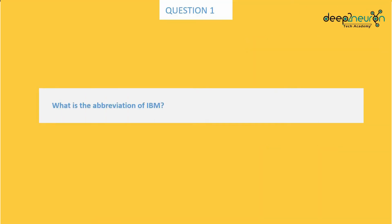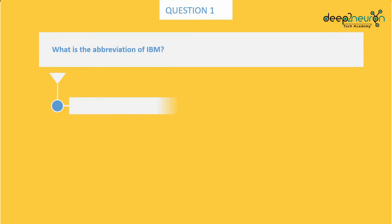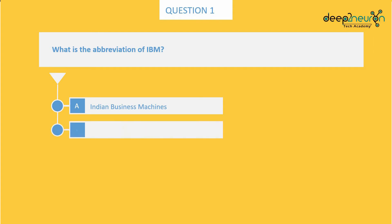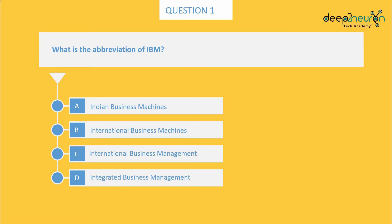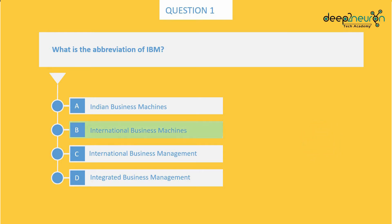Question number 1: What is the abbreviation of IBM? Option A: Indian Business Machines. Option B: International Business Machines. Option C: International Business Management. Option D: Integrated Business Management. The right answer is Option B.